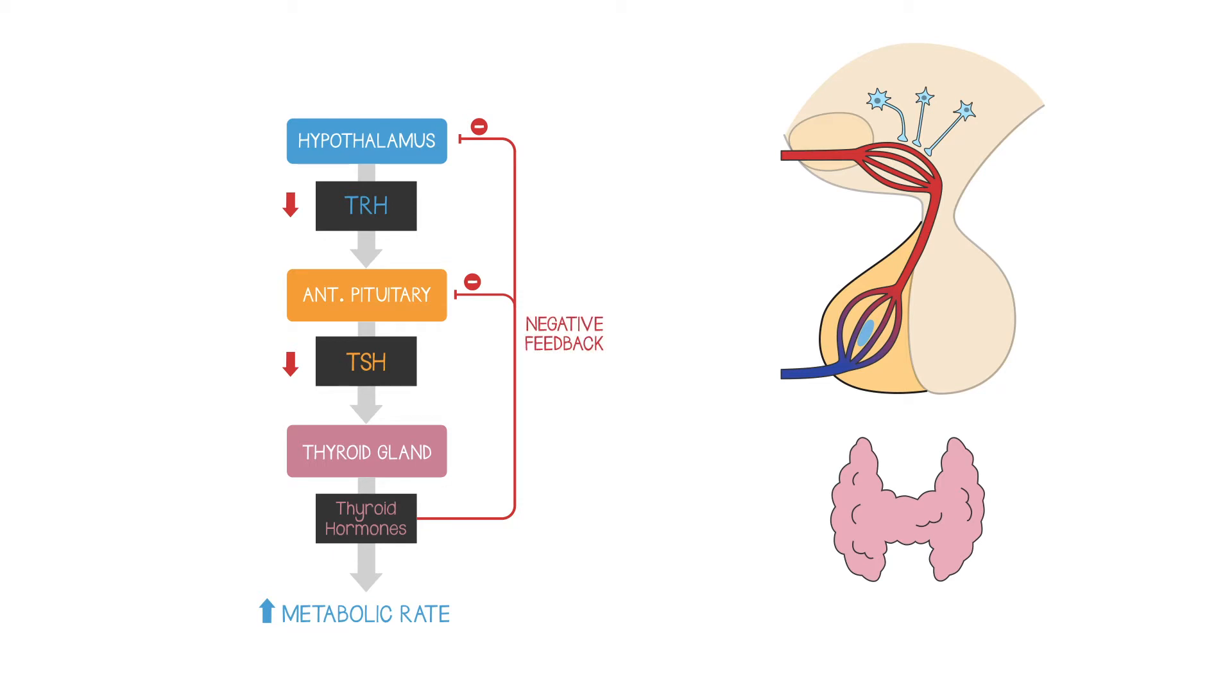This control structure involving hypothalamus, anterior pituitary, and thyroid gland is referred to as the hypothalamic pituitary thyroid axis.